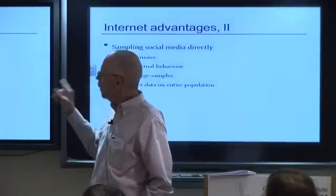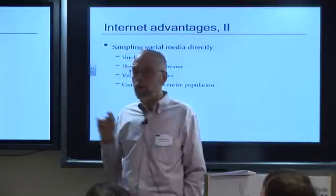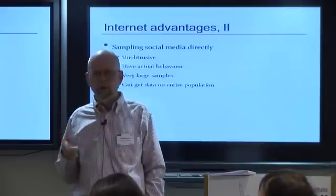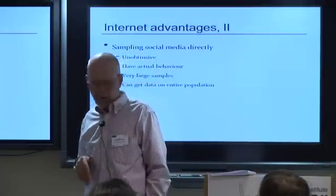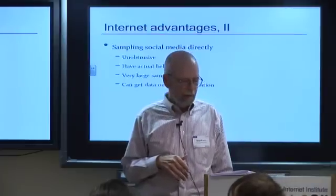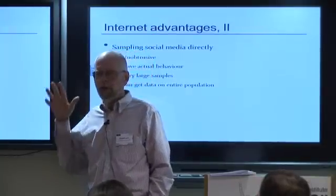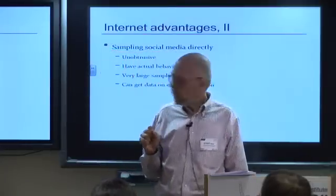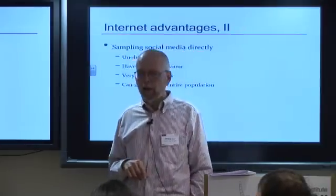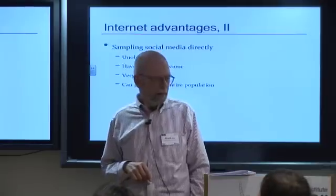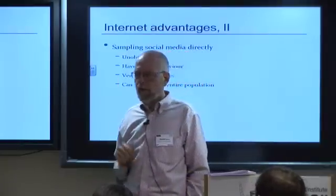If you're sampling social media directly — web pages, blogs, tweets — you have other advantages. They're unobtrusive, which is a big deal. People don't know they're being observed, so their behavior is not being changed by the fact they're under observation. Sampling tweets would be a good example of unobtrusive behavior — you're observing actual behavior, not self-reported behavior. You can get very large samples very quickly at low cost — millions are possible. It allows analysis of subgroups very easily. And finally, you can get data on an entire population — even a very large population can be assembled into a dataset.